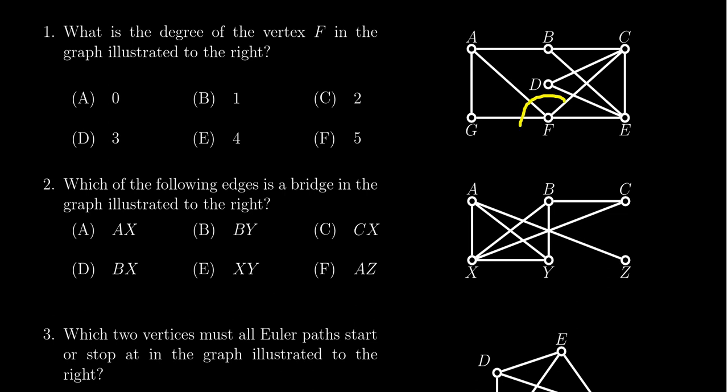So if you look at vertex F, I'm just going to draw a little circle around it, because the degree of a vertex is the number of edges that are connected to it. Loops are counted twice, if there were any. And so if you draw a circle around the vertex, you can see how many edges are in that circle.